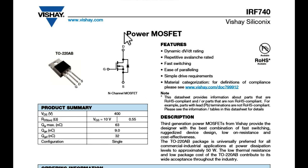What about drain-to-source voltage when the MOSFET gate is off? If you are driving your MOSFET with 12 volt, you can select a MOSFET with VDS of around 20 volt. If you are sure that your supply voltage is stable at 12 volt ±5%, a 20 volt MOSFET should not be an issue. Voltage is generally not a major concern here.